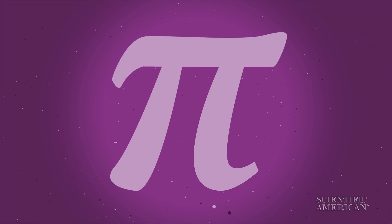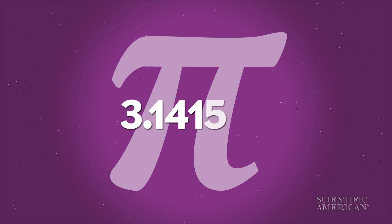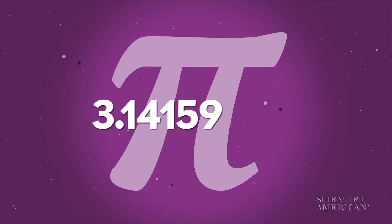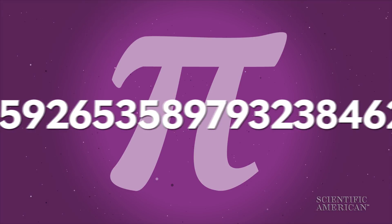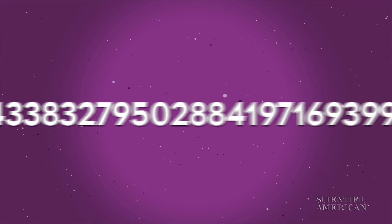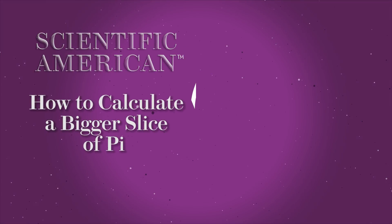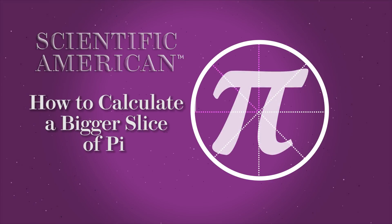You probably know that pi equals 3.1415 something, followed by many, many more digits. But what is pi, and how do you estimate its value? This is Scientific American. I'm Lydia Chain.